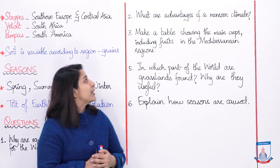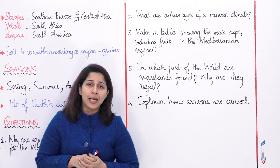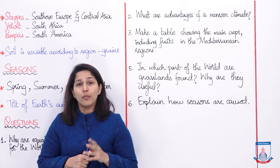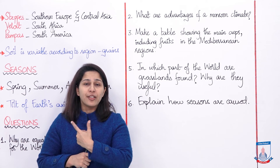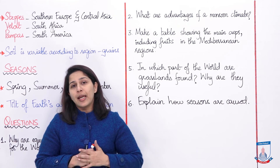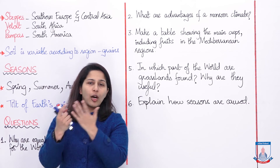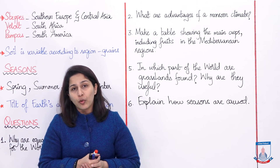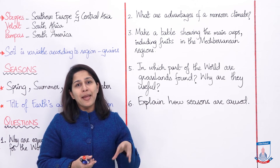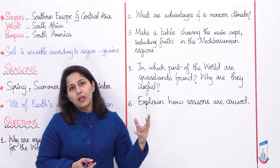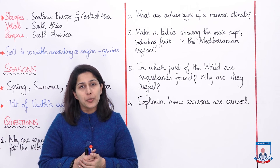The second question is: what are the advantages of a monsoon climate? Monsoon was the first climate we discussed. The advantage of monsoon climate is obviously very fertile soil — it brings rain, it makes the soil fertile, so agriculture and growing of crops is very useful. Plus, monsoon climate also affects the temperature of that region as well.